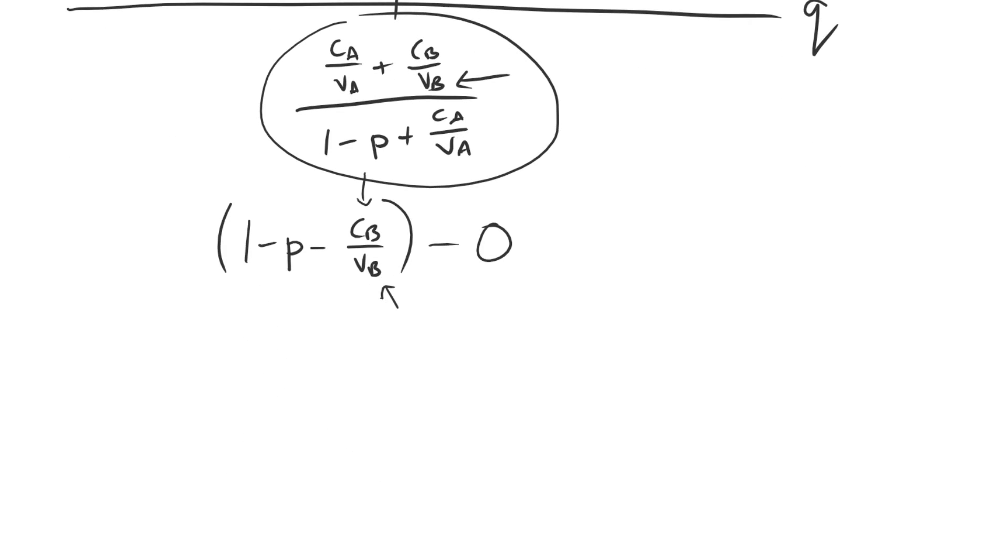So let's just copy that down here. We have CA over VA plus CB over VB plus epsilon, all divided by 1 minus P plus CA over VA. And our expectation is that that's going to be smaller. It's going to be to the left of the original cut point. CA over VA plus CB over VB, no epsilon there because we haven't changed it. This is the original amount. All over 1 minus P plus CA over VA. Now all we need to do is manipulate this inequality and demonstrate that it's true.